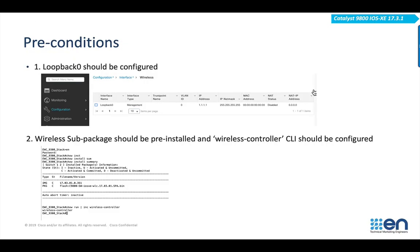There are two prerequisites for turning on the embedded wireless functionality on the Cat 9K. The first is that the loopback address needs to be configured, and the second is that the wireless sub-package needs to be installed using the install commands on the CLI. Successful installation of the wireless package can be verified by running the show install summary command. In addition, the wireless controller CLI also needs to be configured.